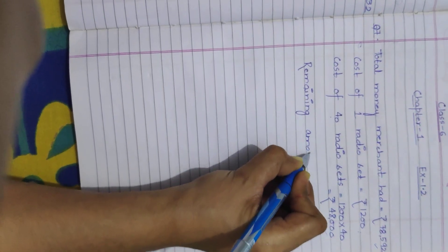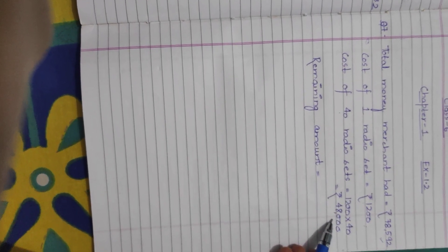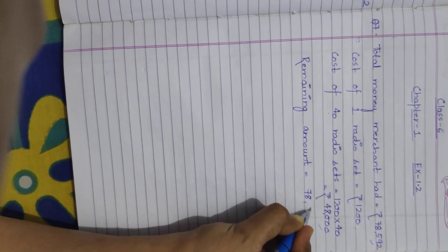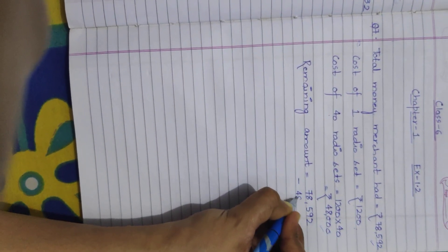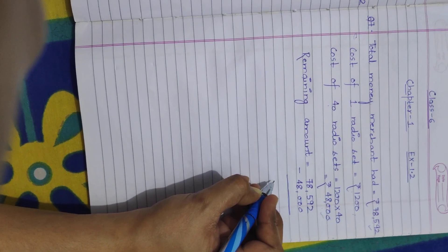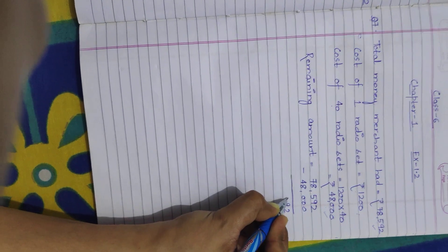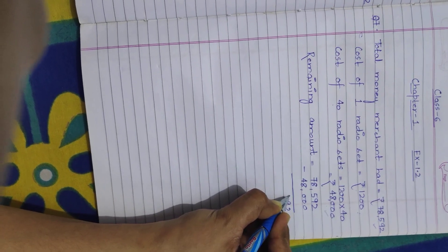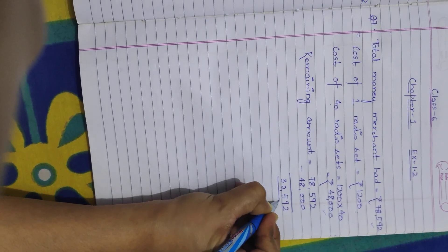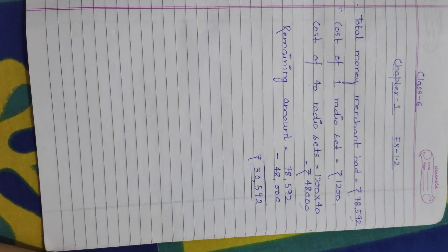Remaining amount equals: for calculating the remaining amount, we will subtract both numbers. The total amount the merchant was having is 78,592, and this much amount — 48,000 — will be used for purchasing 40 radio sets. So, 78,592 minus 48,000 gives us rupees 30,592. That is the total amount that will remain with her.